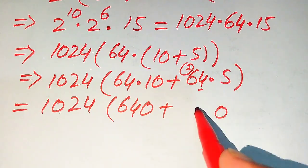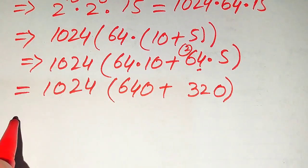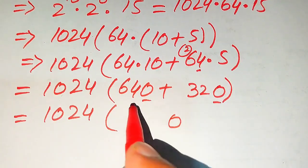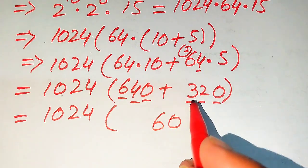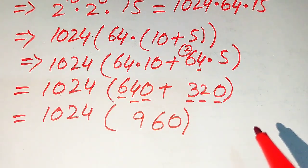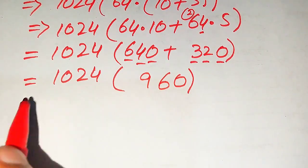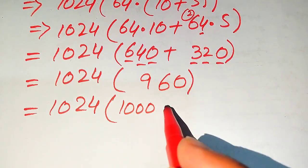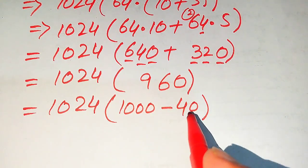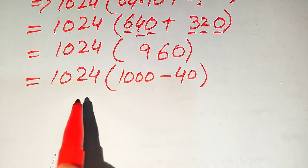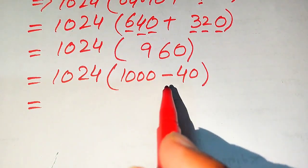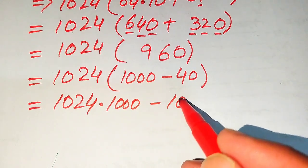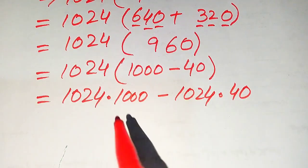So 64 times 15 equals 960. Now we need to compute 1024 times 960. We rewrite 960 as 1000 minus 40, since 1000 minus 40 equals 960. We then multiply 1024 separately by each part: 1024 times 1000 minus 1024 times 40.